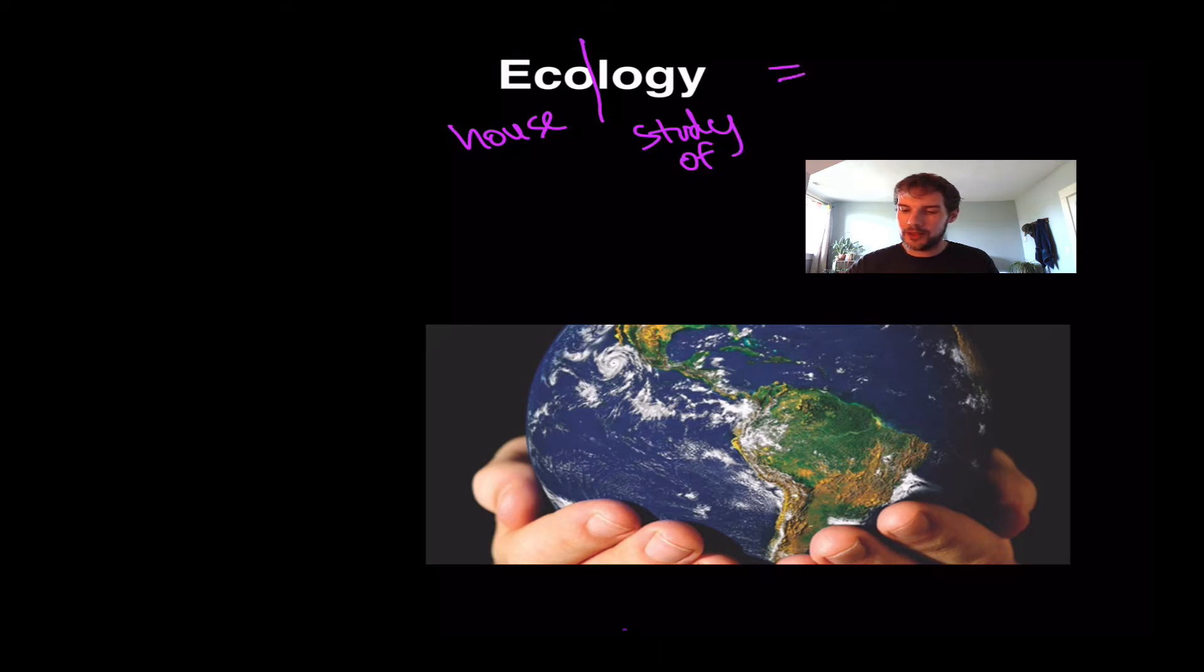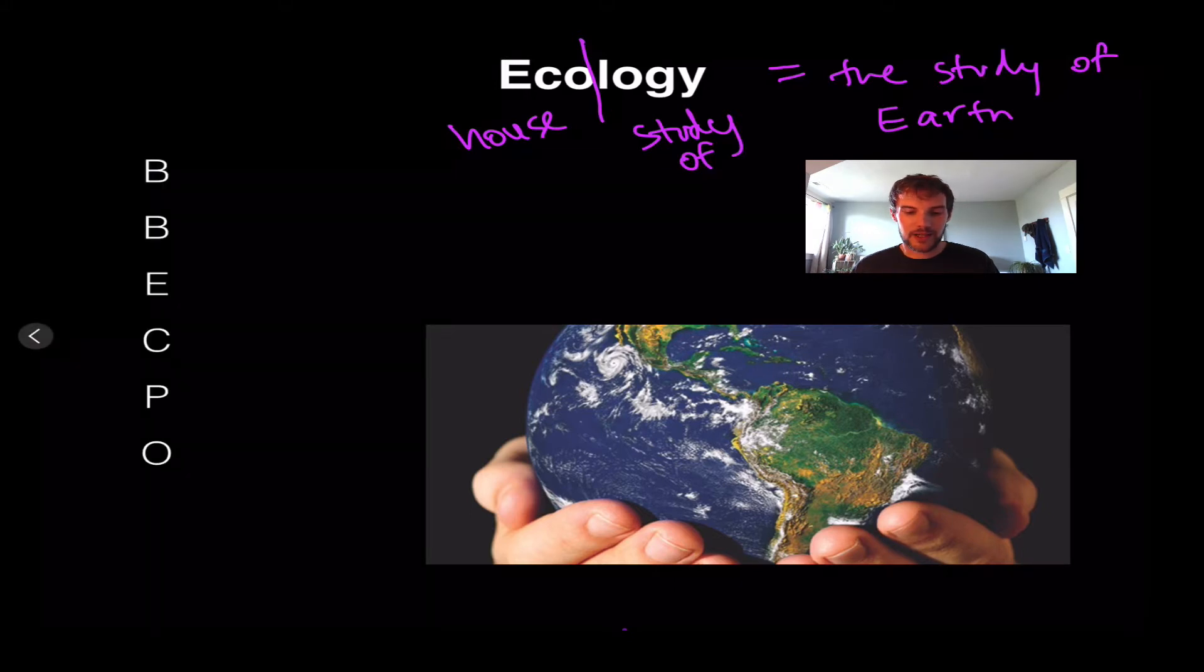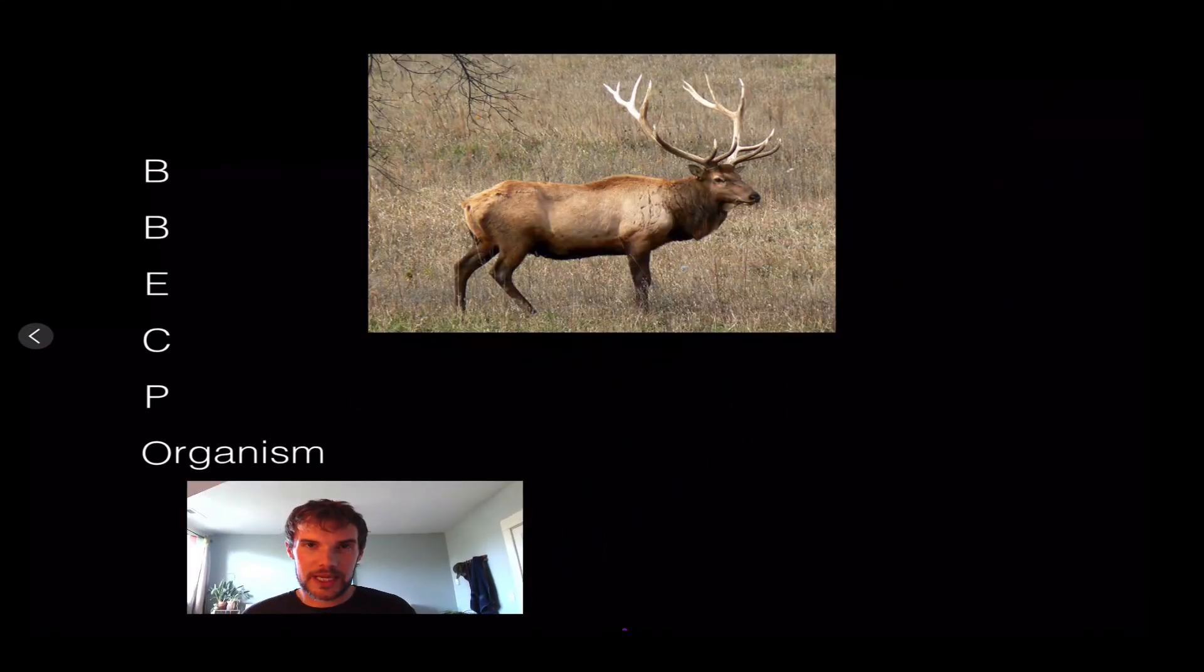We like to organize how we talk about different systems of ecology and our Earth, so we use this mnemonic device called BEBEKPO, and we'll get to each type of organization. The first one, which is the smallest, is going to be an organism.